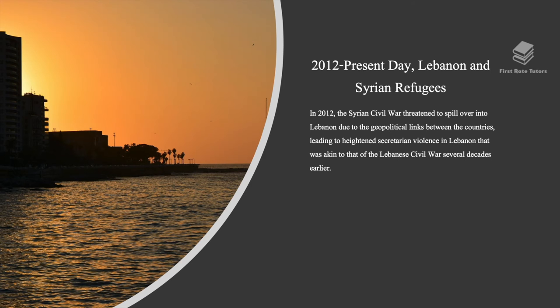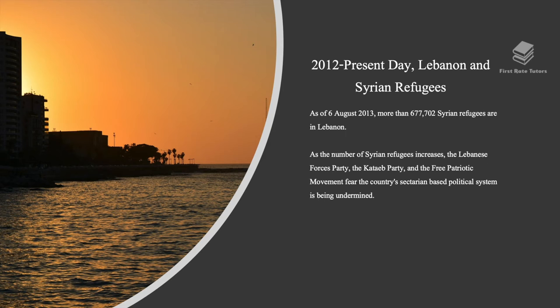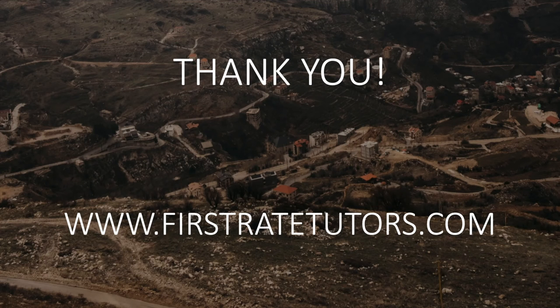In 2012, the Syrian civil war threatened to spill over into Lebanon due to geopolitical links between the countries, leading to heightened sectarian violence in Lebanon akin to that of the Lebanese civil war several decades earlier. As of August 6th, 2013, more than 600,000 Syrian refugees were in Lebanon. As the number of Syrian refugees increased, the Lebanese Forces party, the Kataeb party, and the Free Patriotic Movement feared the country's sectarian-based political system was being put under strain.